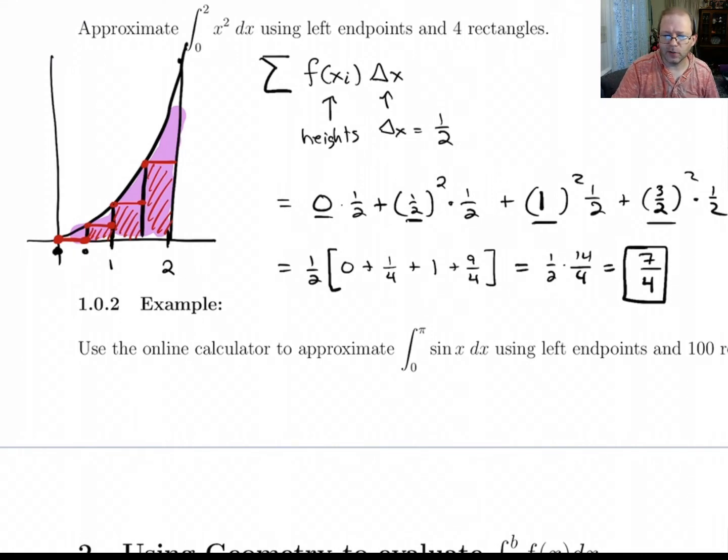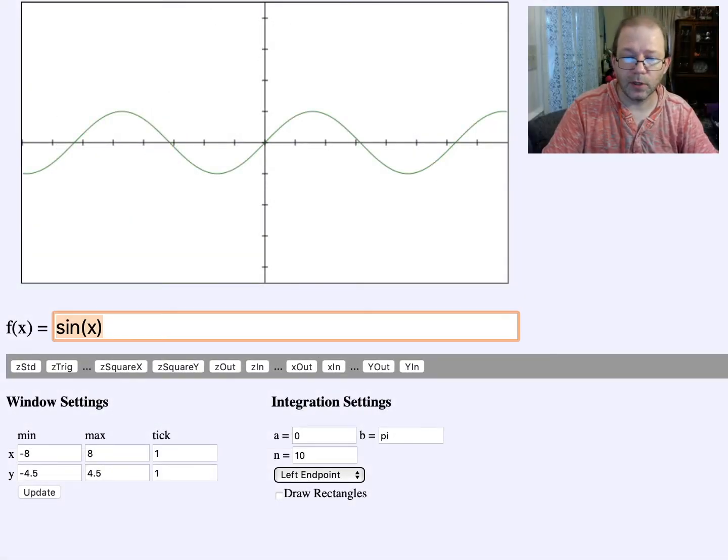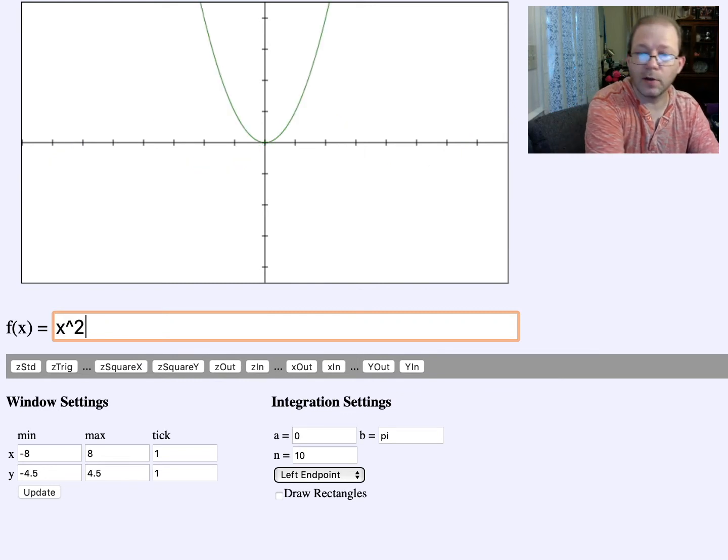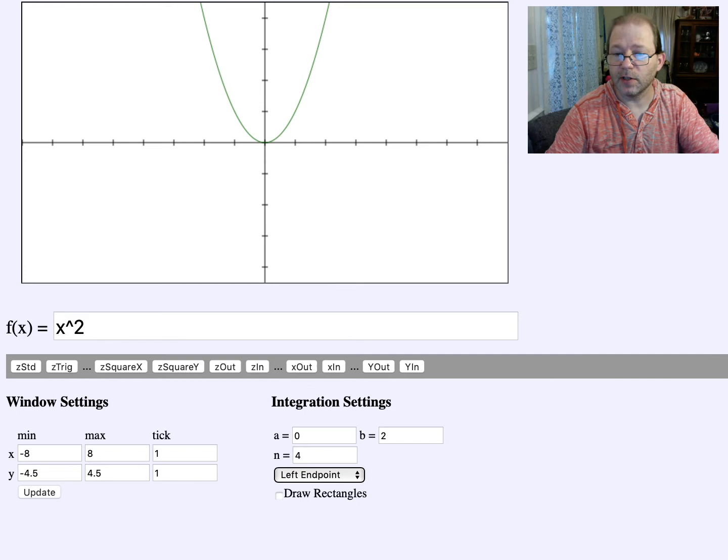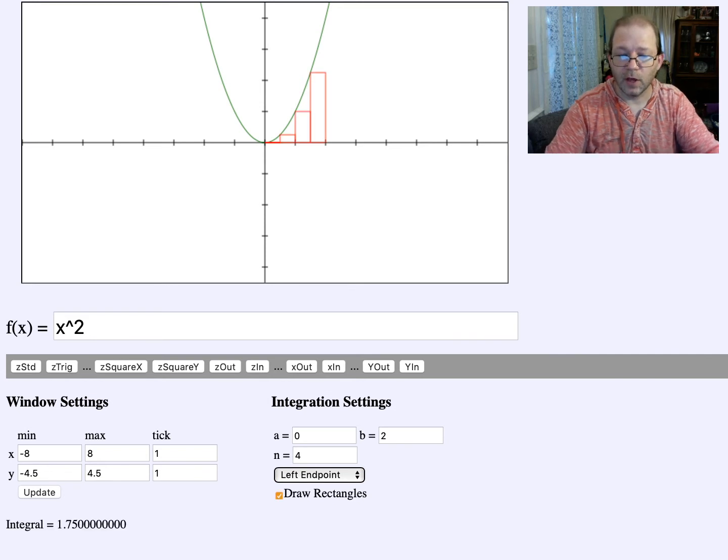Now let's use the online calculator to check this. We're looking at y equals x squared. We're going from 0 to 2 with 4 rectangles. I'll draw those rectangles in. It gives me those. And sure enough, it gives me 1.75 for the approximation. So that checks that this is correct. We got the correct approximation.